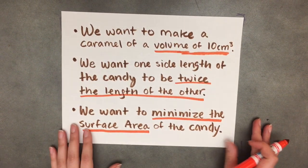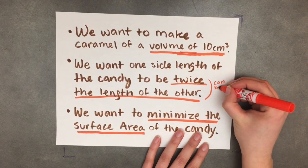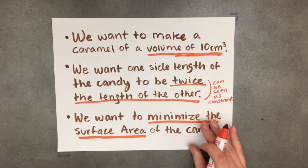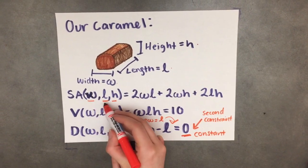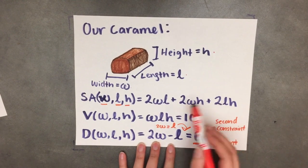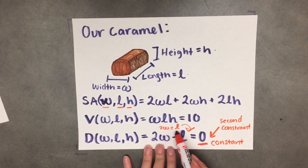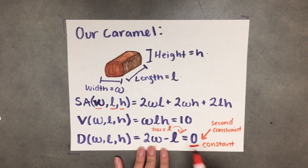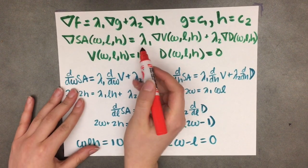Now we're going to look at the same caramel problem. We still want to minimize the surface area with a volume of 10 cm³, but now we're treating the dimension restriction — that one side is twice the other — as a second constraint. This time we have three variables: width, length, and height. Here is our surface area function and our volume function, now dependent on width, length, and height. We add a new constraint function d for our second constraint, and we must set it equal to a constant: instead of writing two times width equals length, we write it in the form two times width minus length equals zero.